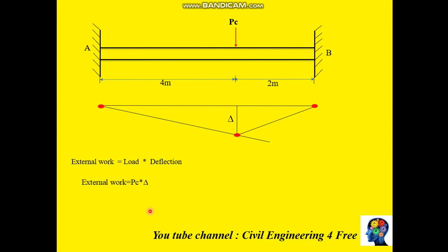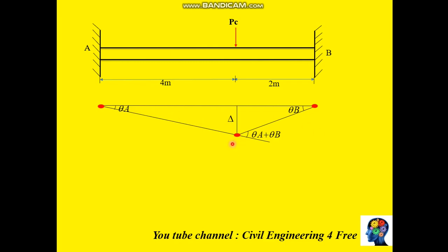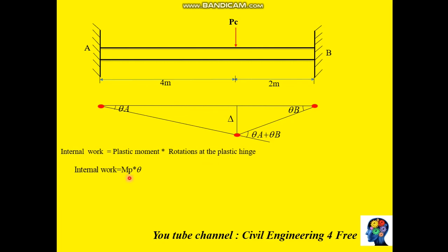The external work will be the product of the collapsible load multiplied by the deflection. For the internal work, you have to specify the rotations at the three plastic hinges: theta a, theta b, and theta a plus theta b. The internal work will be the plastic moment multiplied by the rotations at each plastic hinge, and these rotations can be determined using trigonometry.